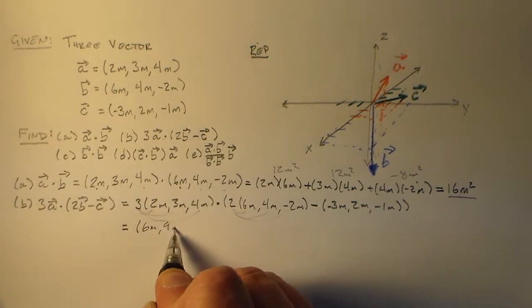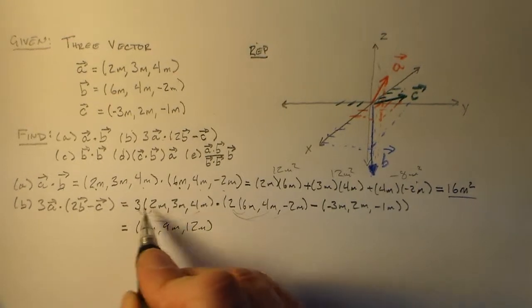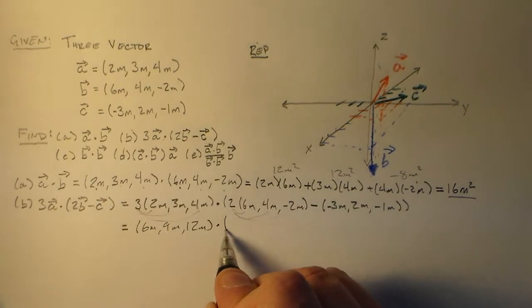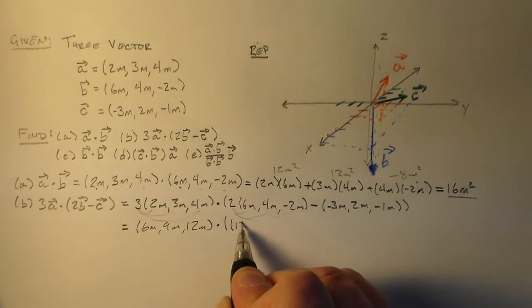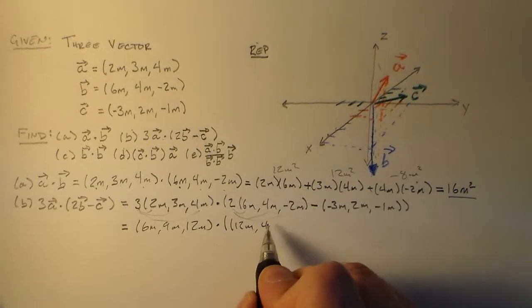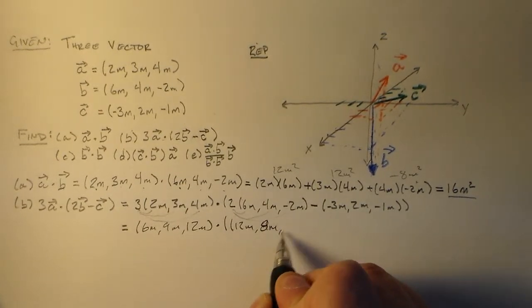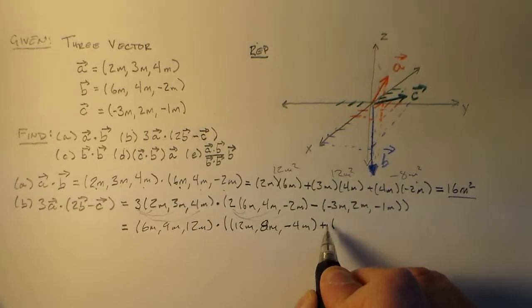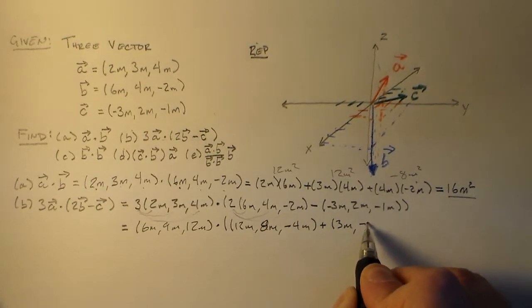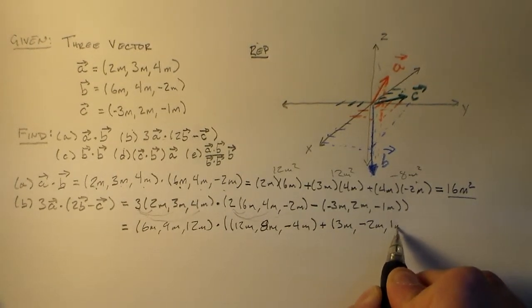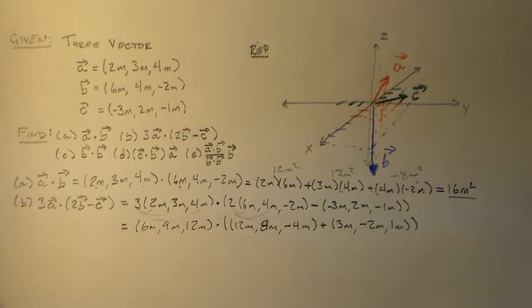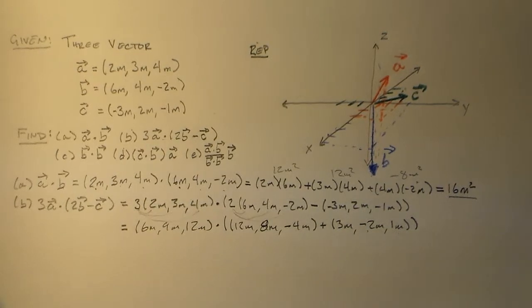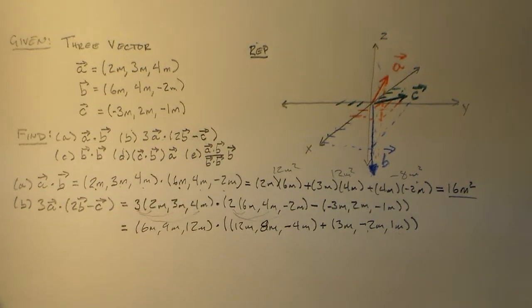We've got 6 meters, 9 meters, 12 meters. To be honest, we didn't have to do this one because we could do it at the very end, but this one we have to do right away, so we'll do both of them at the same time. Times 12 meters, 8 meters, minus 4 meters, minus. Let's foil that minus sign in too, so we have plus 3 meters, minus 2 meters, plus 1 meter. So we distributed that minus sign into each one of these different components. Everything's happy, you're happy, I'm happy, we're ready to go.